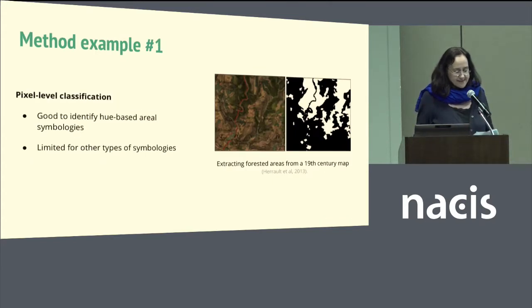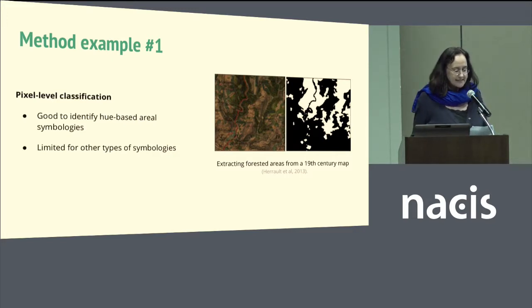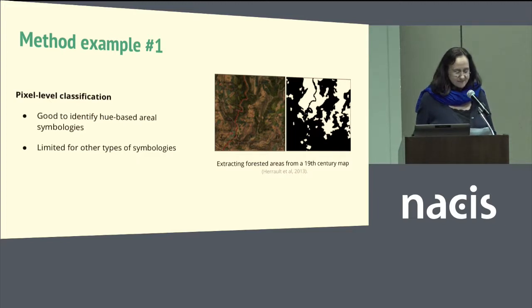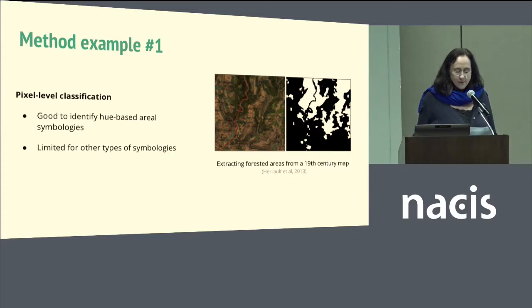For instance, pixel-level classification, supervised or unsupervised, is good at identifying hue-based aerial symbologies. In the example shown here, the forested areas symbolized in green were extracted. However, the method does not perform as well when applied to other types of symbologies.